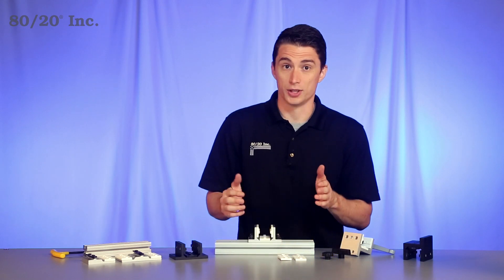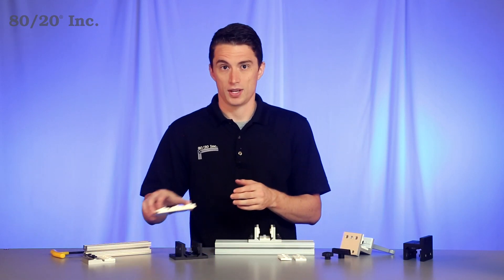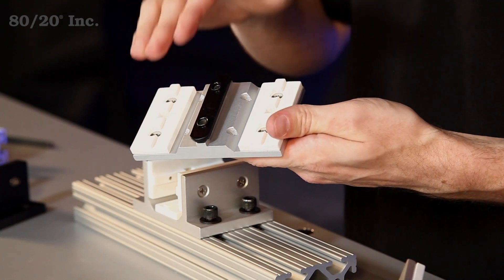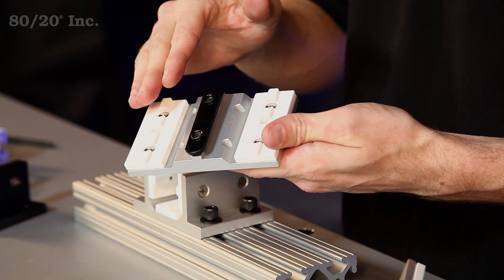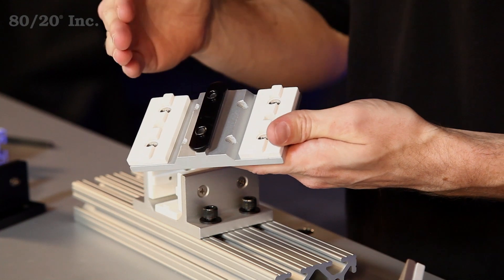Now the next type of linear motion we want to talk about is our unibaringer. It's available in both single and double flanged options. They come preassembled with all recommended hardware included.